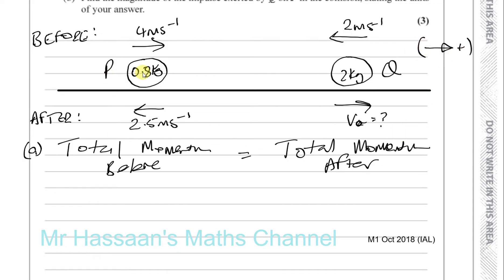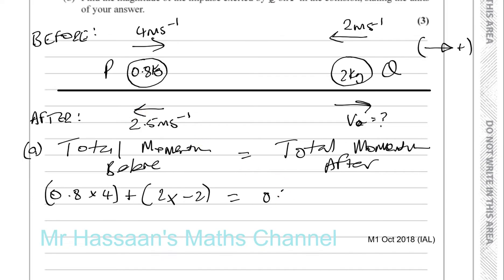So the momentum of P — momentum is mass times velocity — is going to be 0.8 times 4. Plus the momentum of Q is going to be 2 times negative 2, because it's moving in the direction opposite to the positive direction. And the total momentum after the collision: P is now reversed, so it's going to be 0.8 multiplied by minus 2.5, plus 2 times the velocity of Q. The answer will actually tell us the direction Q is going — if it comes out positive, its direction has been reversed, since it was originally going in the negative direction.